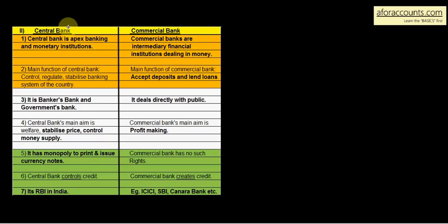Difference between Central Bank and Commercial Bank. Central Bank is apex banking and monetary institution. Her country mein ek central bank hota hai. It is institution controlling all the other banks. Commercial banks are intermediary financial institutions dealing in money. So apex banking institution kaunsa hai? Central Bank and it deals with other monetary institutions. Jab ki commercial banks are intermediary financial institutions dealing in money.